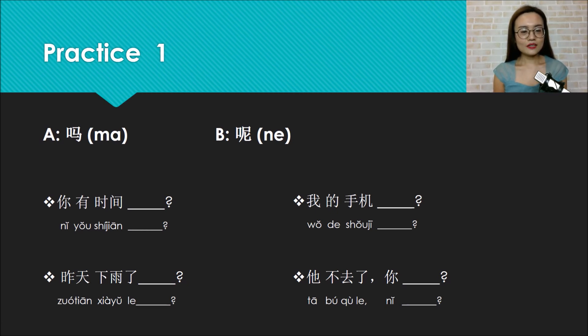Practice one. Choose A (ma) or B (ne) to fill in the blanks. First one: Ni you shijian? This question obviously is asking do you have time. You can just answer yes or no, right? So this one is a simple question. We put yes, ma here. Ni you shijian ma? Do you have time?